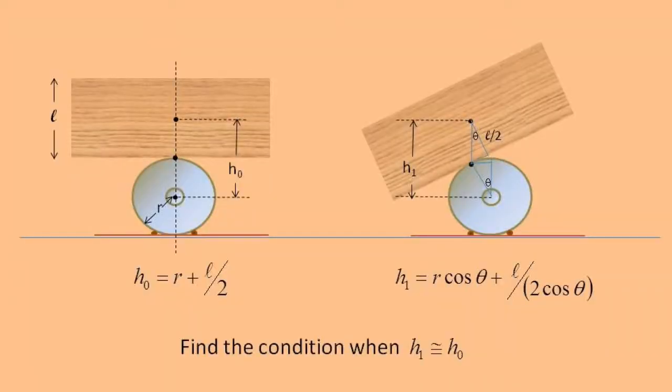We will now find the condition for neutral equilibrium in this system. To find the condition for neutral equilibrium, we calculate the height above the center of the support in two situations: when the wood is level and when the wood is tilted. For neutral equilibrium, the potential energy in the two situations is the same, so we require that h1 is approximately equal to h0.